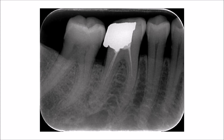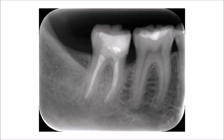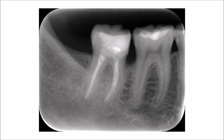Looking at this other radiograph, you will see that in this area the bone does not maintain its parallel relationship with the cemento-enamel junction, but instead goes in an angular direction. As you can see, the open contact present between these teeth may have initiated and promoted this angular bone resorption.